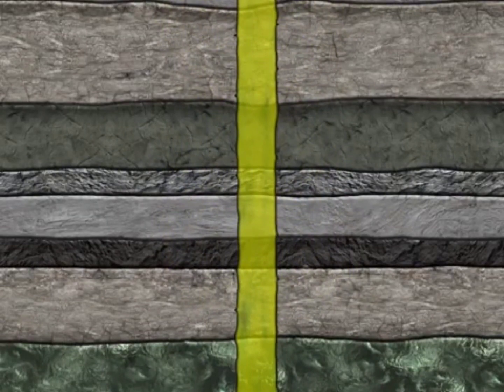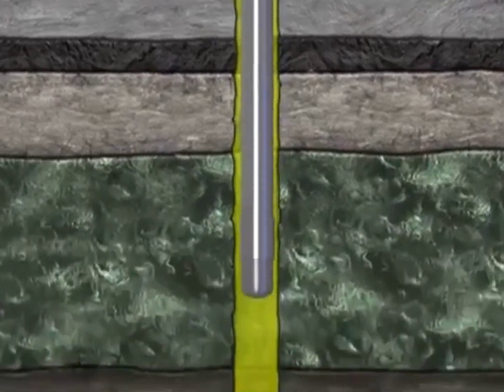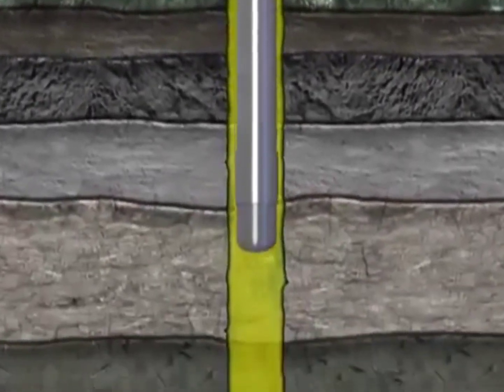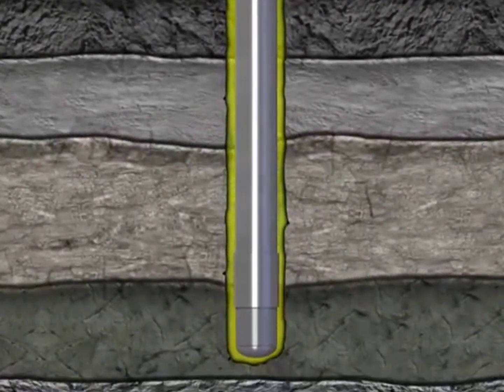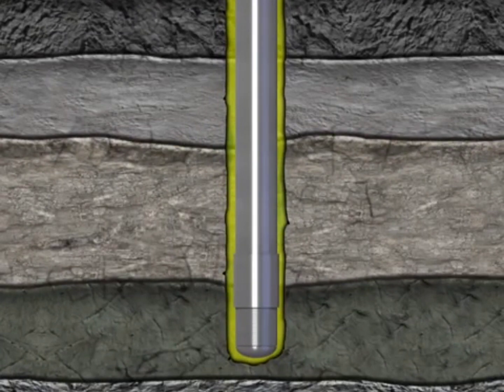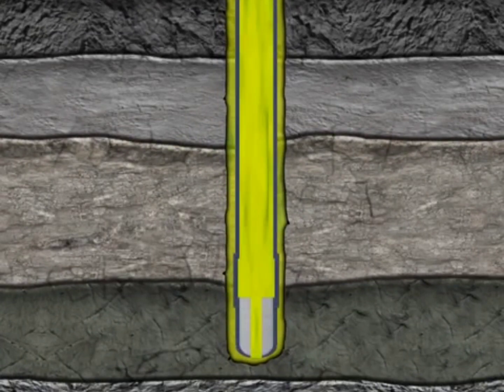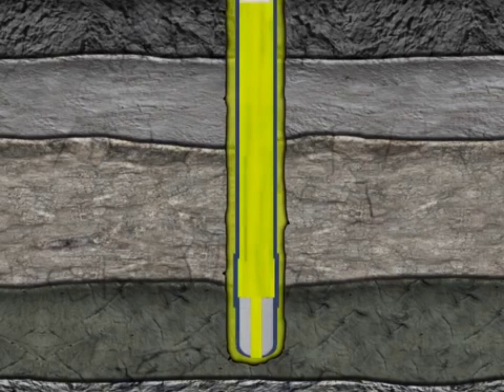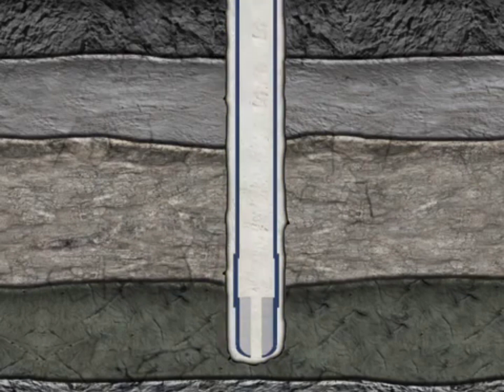After the payzone has been determined and deemed feasible, the well needs to be prepared to extract the discovered hydrocarbons. This process is known as the completion of a well. A common completion method requires inserting a casing string into the newly drilled open hole to prevent the borehole wall from caving prematurely during the various steps of completion.